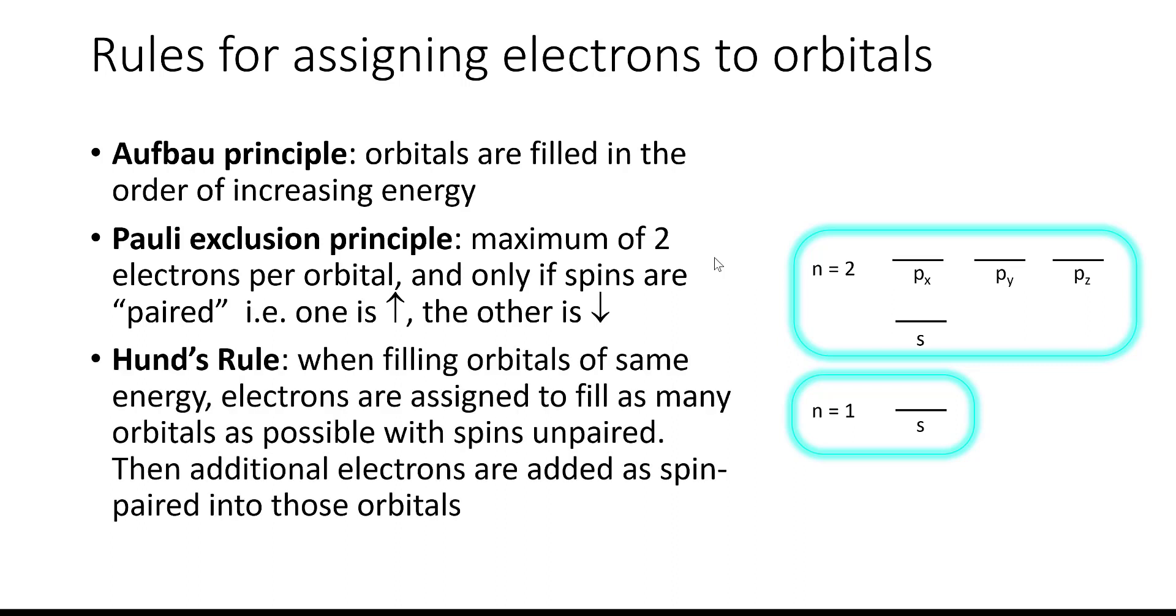And last is Hund's rule, which tells us that when filling orbitals of the same energy, electrons are assigned to fill as many orbitals as possible with their spins unpaired. So for instance, like these 2p orbitals have the same energy, so when we fill them up, we have to fill up all three of them at once. And then any additional electrons that are added would have to be added into these orbitals as spin paired electrons.